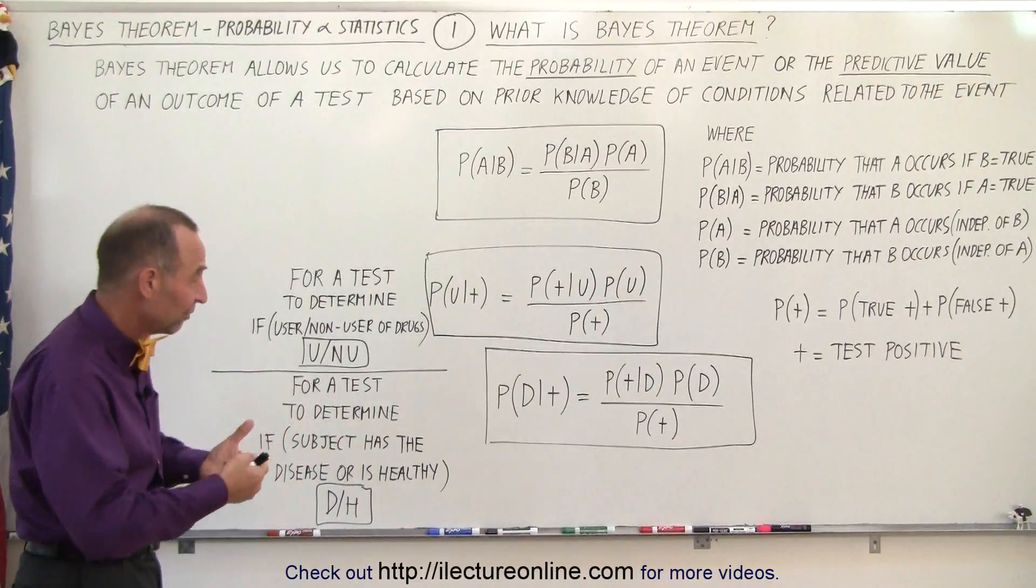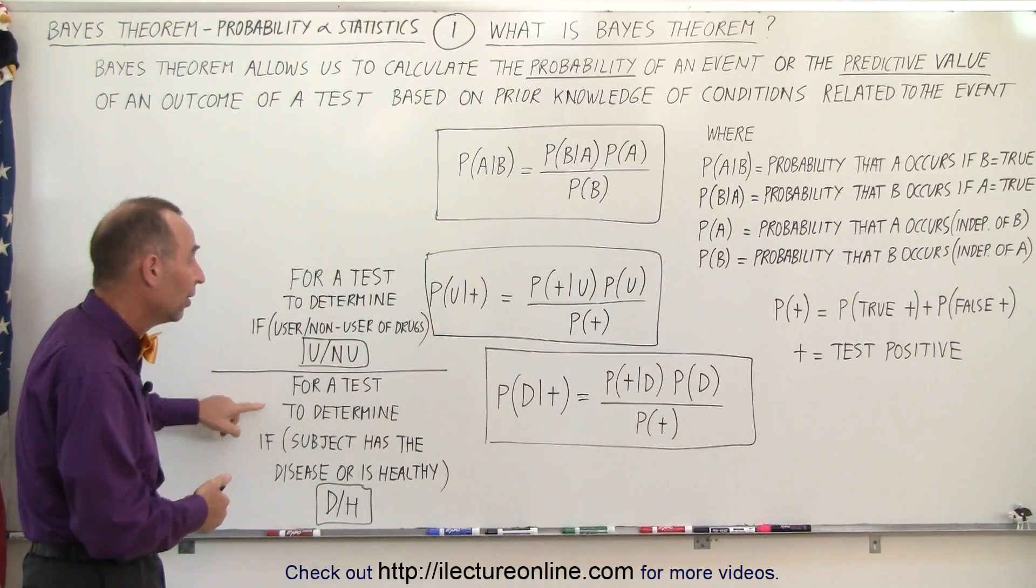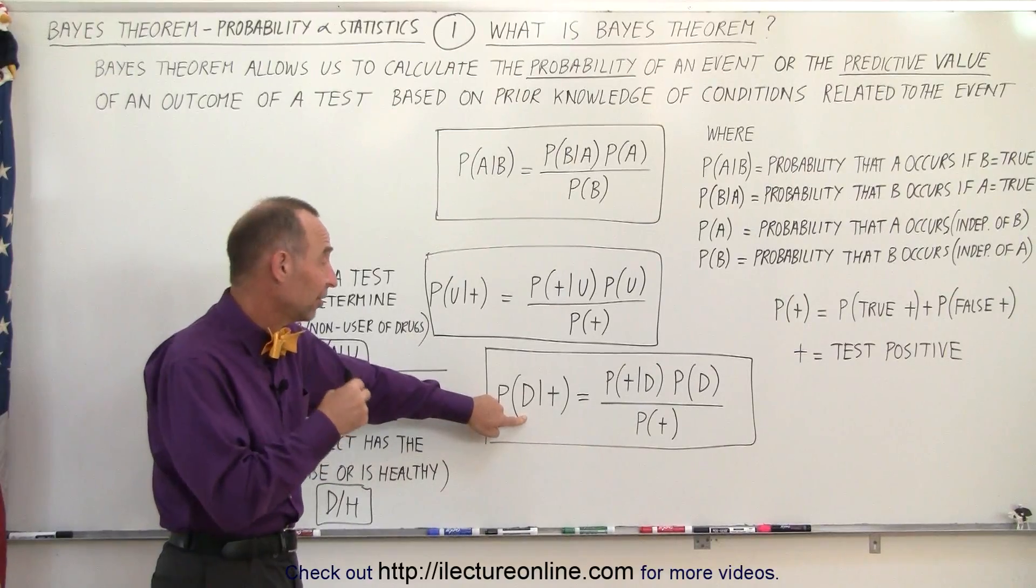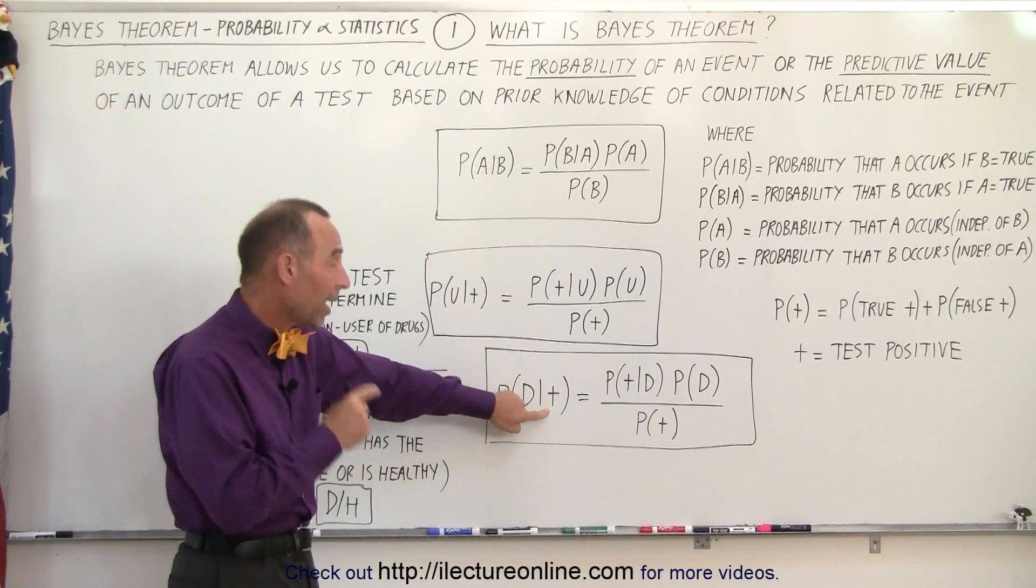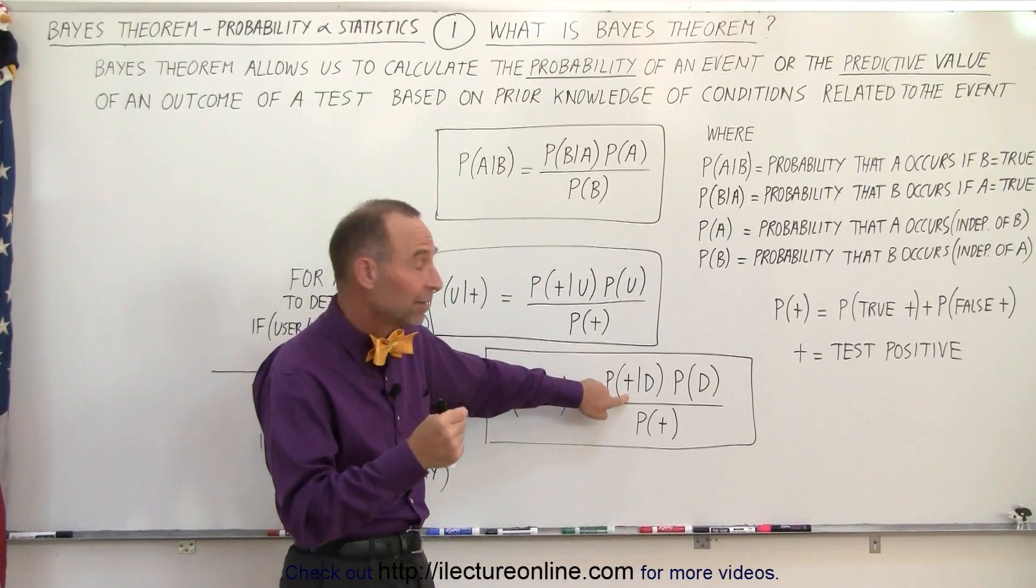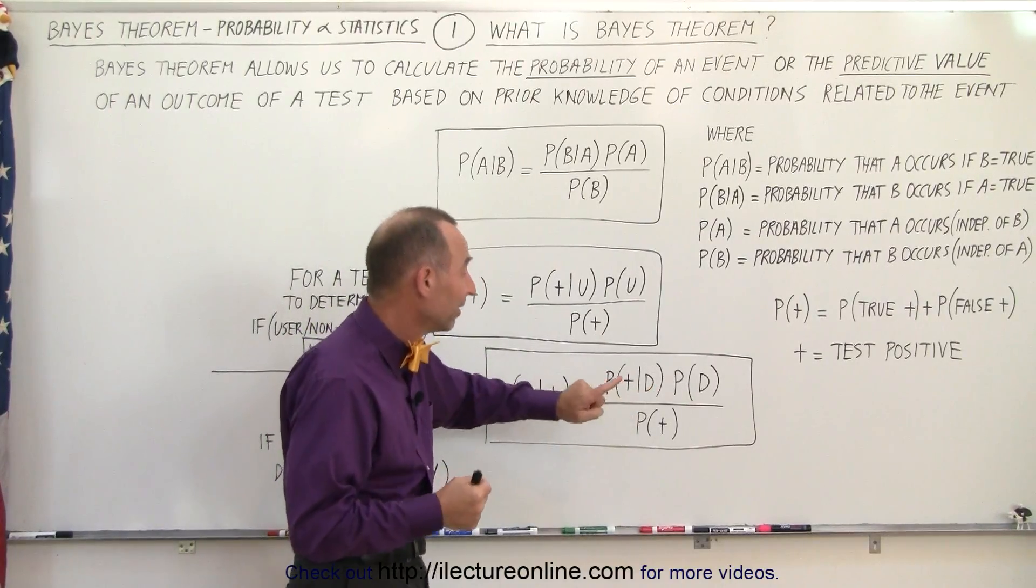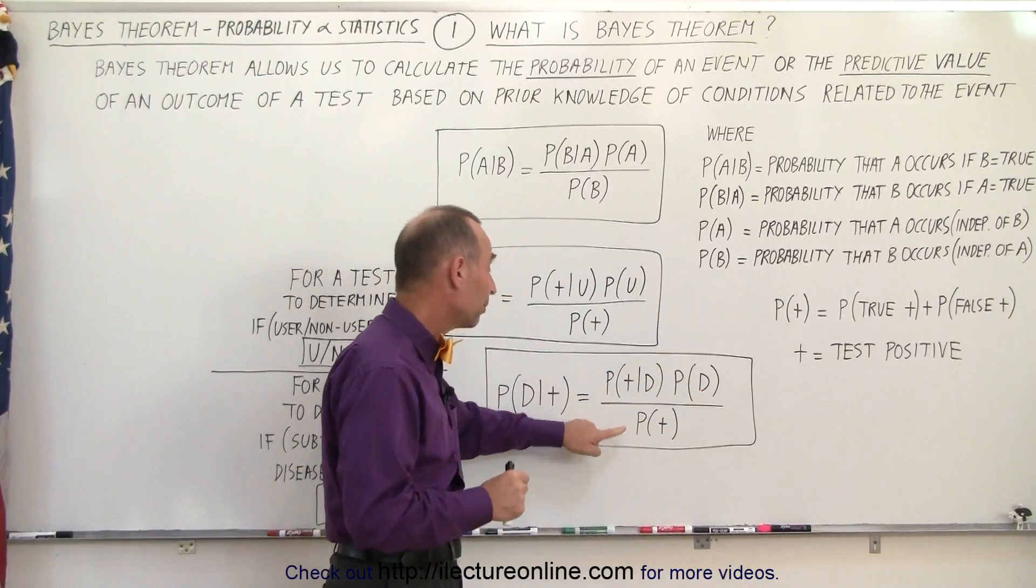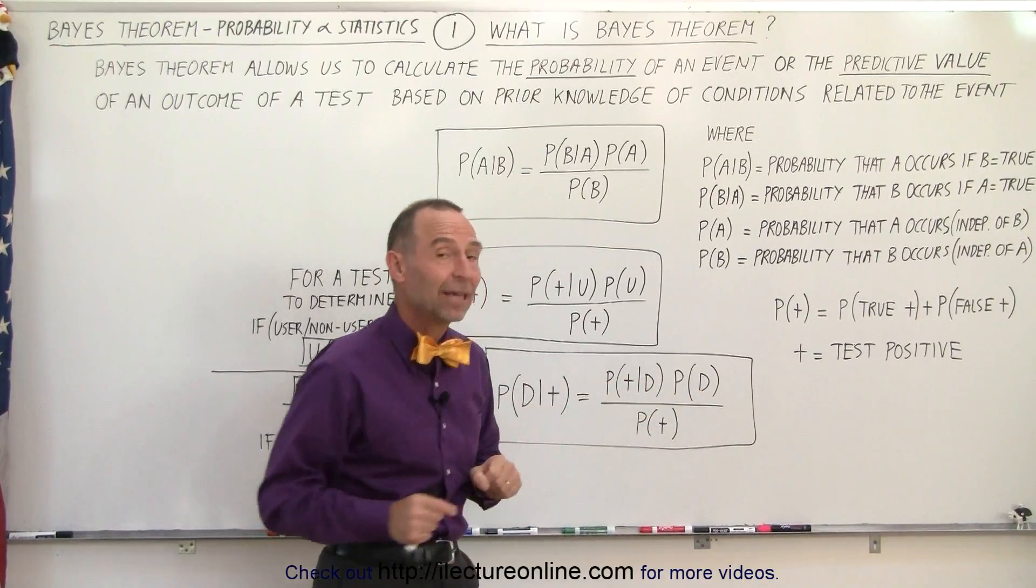In case that we want to test to see if a person has a certain disease or not, we can say that the probability for the person having the disease if the test came out positive is equal to the probability that the test came out positive if the person had the disease times the probability that the person has the disease divided by the probability that the test came out positive.